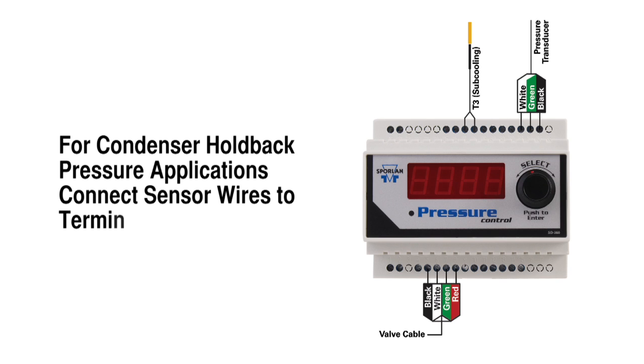For condenser holdback pressure applications, mount the optional liquid inlet temperature sensor, T3, to the liquid line leaving the condenser. Connect the sensor wires to terminals 27 and 28. This sensor may be used to monitor and view subcooling.